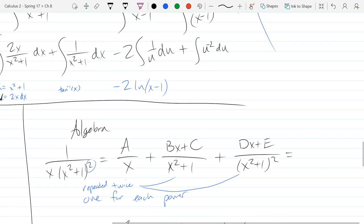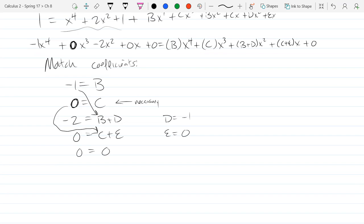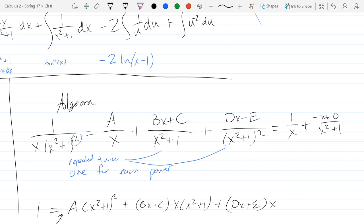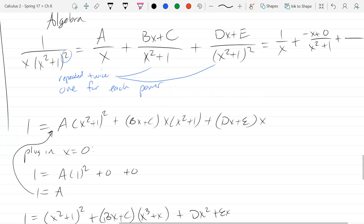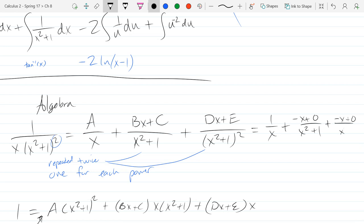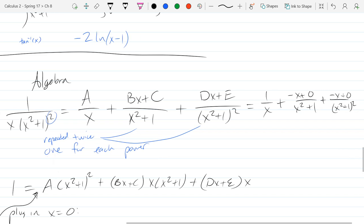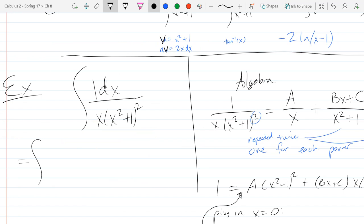a was 1, b was negative 1, c was 0, d is negative 1, e is 0. So that is our new form of this original fraction: 1 over x plus negative x over x squared plus 1 plus negative x over x squared plus 1 squared dx.